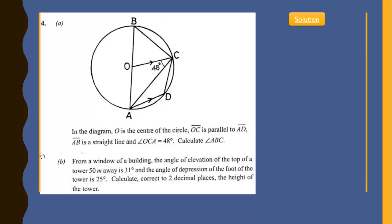Question 4a: In the diagram, O is the center of the circle, OC is parallel to AD, and line AB is a straight line passing through the center. Angle OCA is 48 degrees. We are asked to calculate angle ABC.